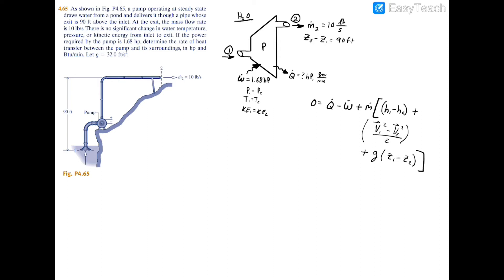We can simplify by keeping the heat transfer and the given power of 1.68. Since T1 equals T2 and P1 equals P2, the enthalpy terms cancel out. Kinetic energy is also negligible with no change in velocity. The only term remaining is the change in potential energy. Simplified, the equation becomes: zero equals Q̇ minus Ẇ plus mass flow rate times g times (z1 minus z2). Solving for Q̇: Q̇ equals Ẇ minus ṁ times g times (z1 minus z2).